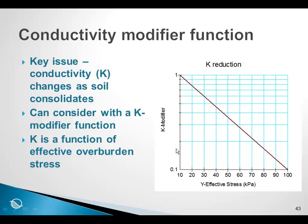Sigma W has the ability to modify the conductivity as the effective stress increases. As you know from a consolidation test, if we load a consolidation sample, the void ratio changes as the load increases. But at each load step, the effective vertical stress also increases, and at each load step, the conductivity of the soil changes.